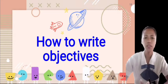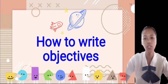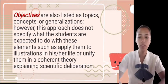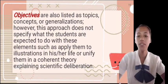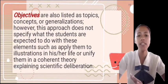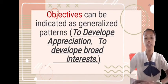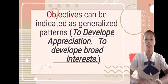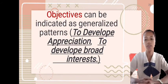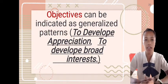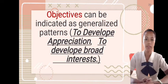How to write objectives? Objectives are often incorrectly stated as activities the instructor must do rather than statements of change for students. Objectives are also sometimes listed as topics, concepts, or generalizations; however, this approach does not specify what students are expected to do with these elements. Objectives can be indicated as generalized patterns to develop appreciation or broad interest, but these are more goals than objectives. It is necessary to specify the content to which the behavior applies, and objectives should specify both the kind of behavior and the content area in which the behavior is to operate.